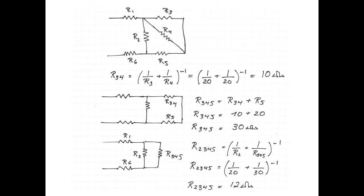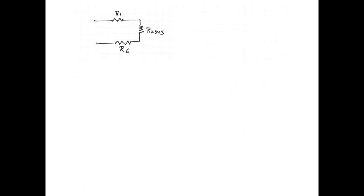Finally, R1, the equivalent of R2,3,4 and 5, and R6 are in series. Adding everything up makes an equivalent resistance of 52 ohms.